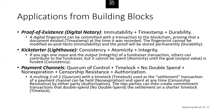Our third example is payment channels, which we'll be spending a lot of time on in this lecture. We're going to leverage quorum of control, timelock, no double spend, non-expiration, censorship resistance, and authorization aspects of Bitcoin. A multi-signature 2-of-2 with a timelock used as a settlement transaction of a payment channel can be held, doesn't expire, and can be spent at any time. It has censorship resistance by either party based on authorization. The two parties can then create commitment transactions that prevent double spending of the settlement on a shorter timelock. Lightning is a good example of payment channels.